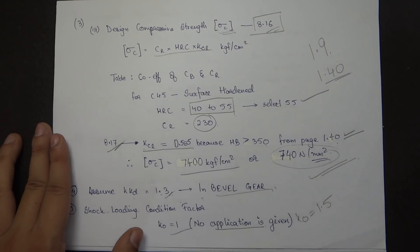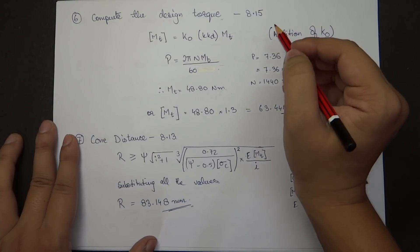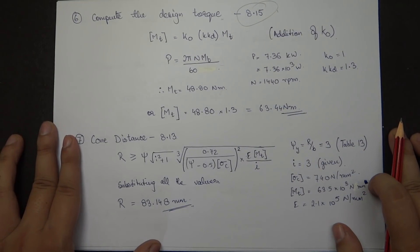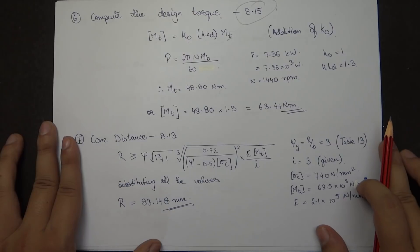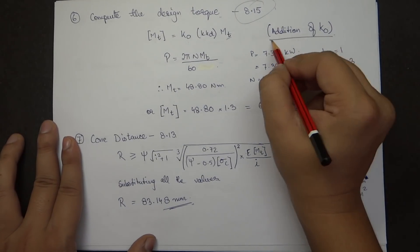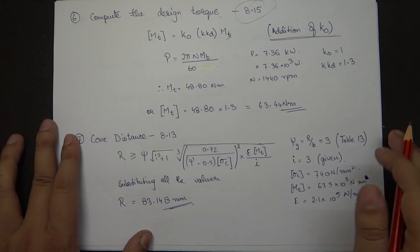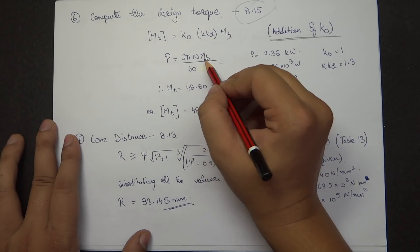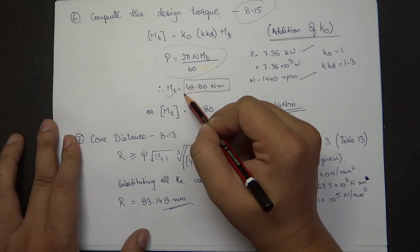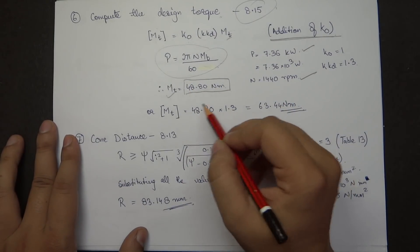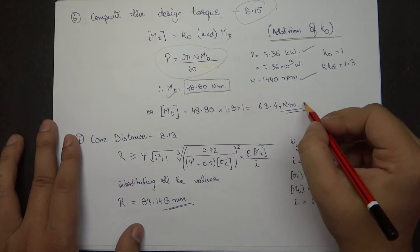The sixth step is computing the design torque. From page 8.15, the design torque for a bevel gear is K_0 × K_KD × M_T. Power is 7.36 kW at 1440 rpm, giving torque M_T = 48.80 Newton meter. The design torque is then 1 × 1.3 × 48.8 = 63.44 Newton meter.